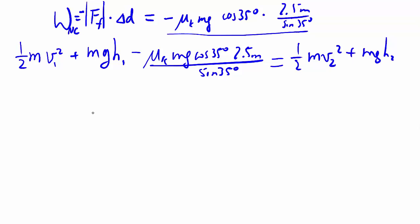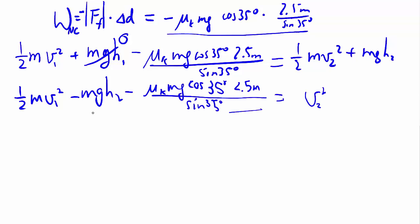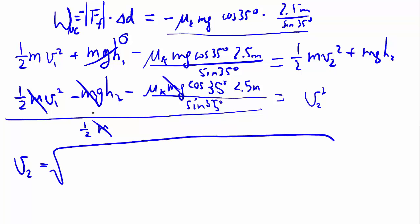We want to solve for v2 out of all this mess. This is 0, we can swing that over, so we have 0.5 mv1 squared, minus mgh2, minus... And we take that all over by 0.5 m. And good news, all the m cancels out. So v2 is, since we're just caring about the magnitude, we're not going to put the plus or minus there.